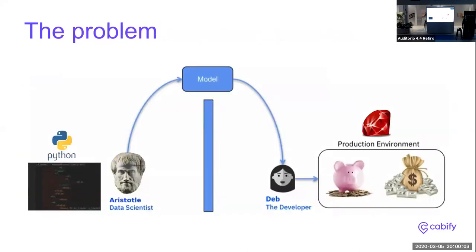An example of a machine learning model is one that could predict the probability of a user ordering a Cabify again. This is the same scenario from the previous presentation: Aristotle the data scientist has implemented machine learning in Python and needs to put the model in production. The problem is that the production environment is written in Ruby, so they need to rewrite the model. As Jesus described, this doesn't scale because it could take months from idea to having a model in production.